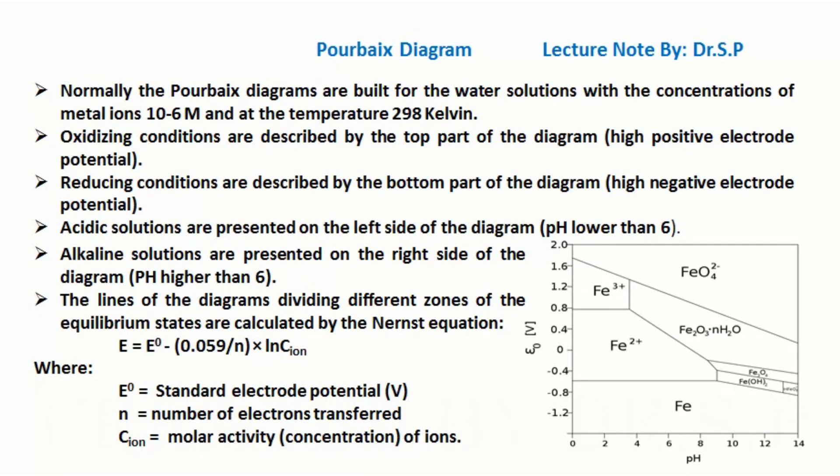Normally the Pourbaix Diagrams are built for water solutions with concentrations of metal ions 10^-6 M and at temperature 298 Kelvin.